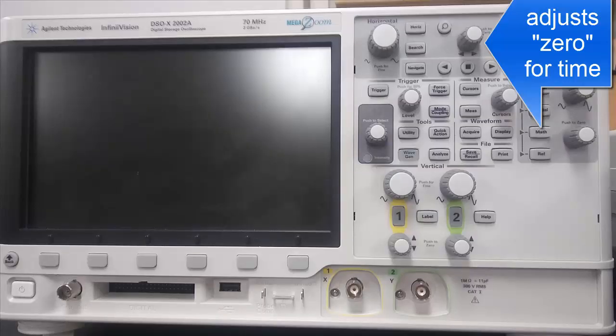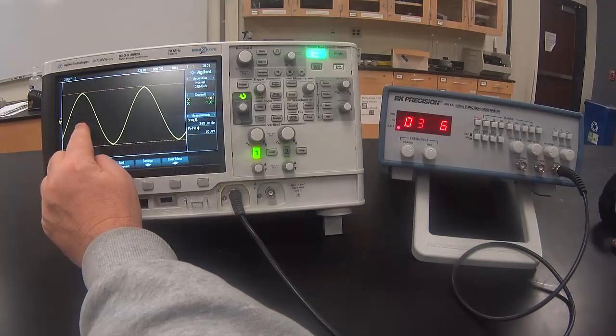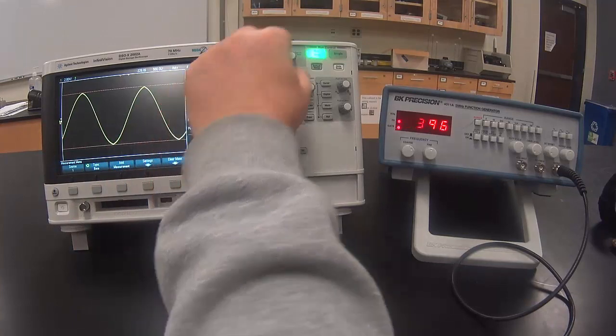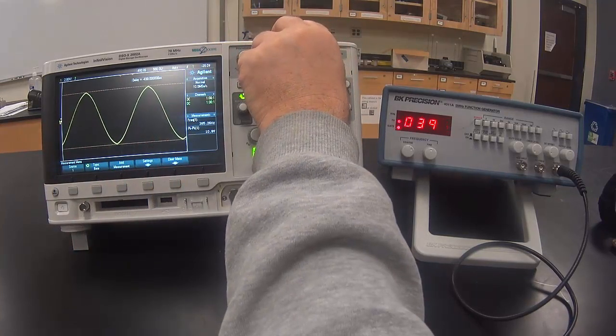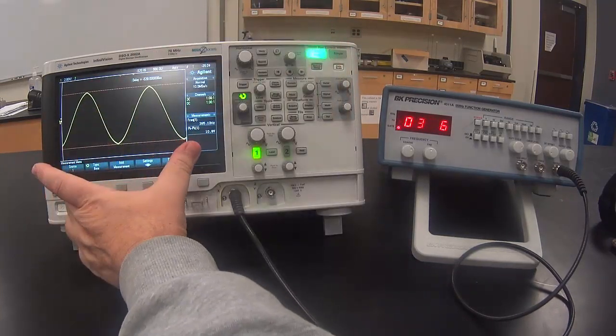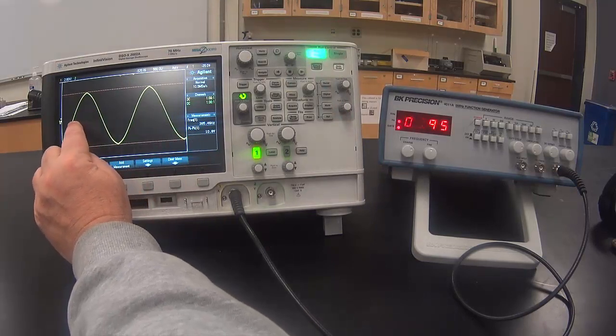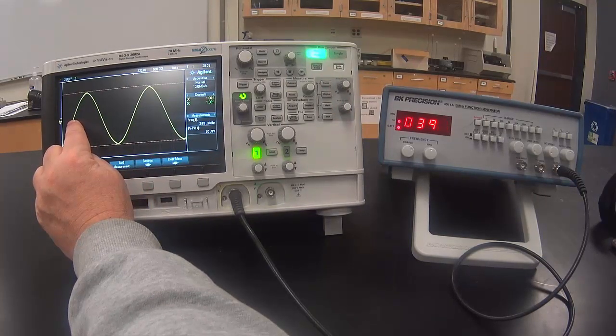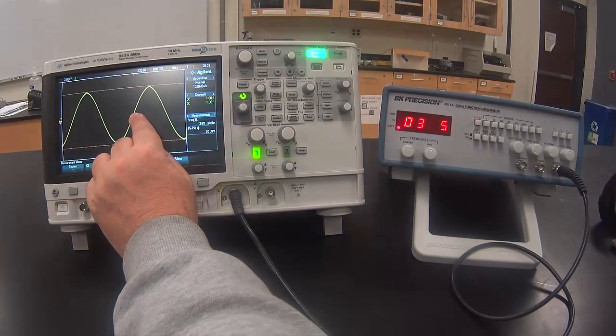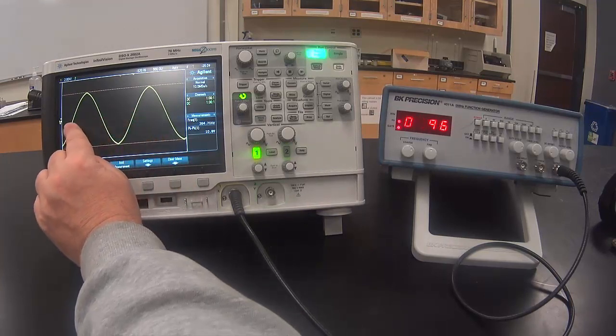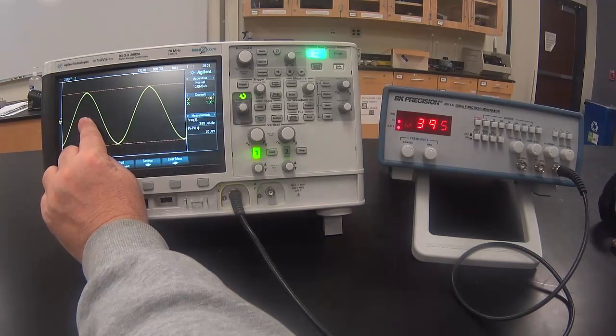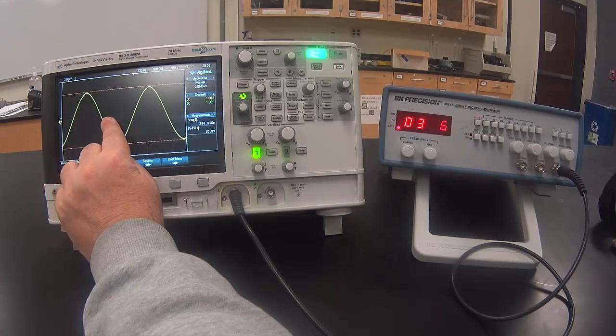This knob adjusts the time, or basically moves the signal left or right. I'm going to adjust it so that it crosses the zero line on the way up at some convenient vertical line. Here it crosses the zero going up, and here it crosses the zero going up, and I count the number of divisions between those two spots.